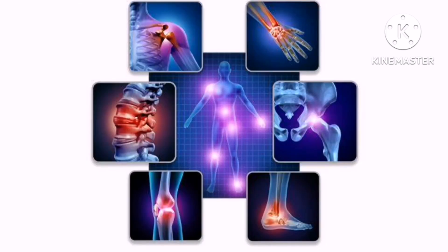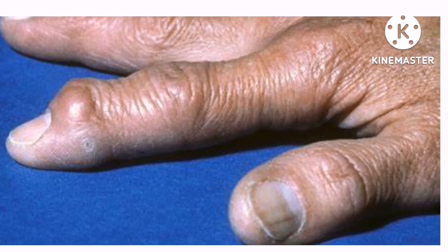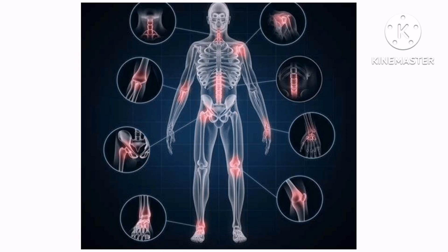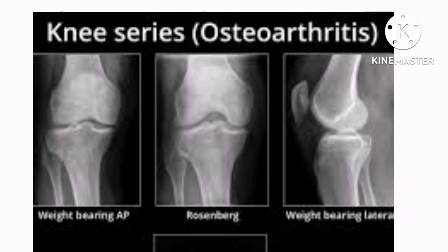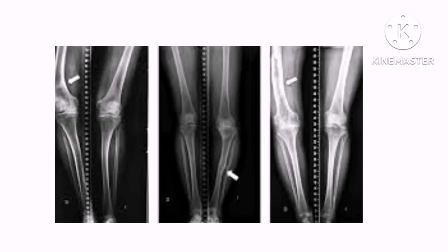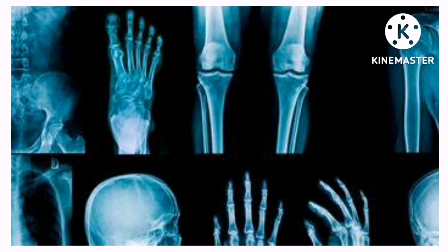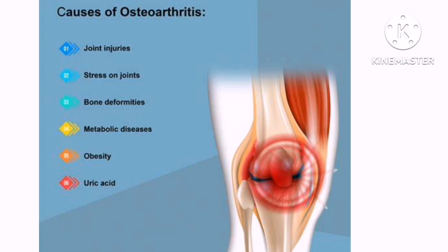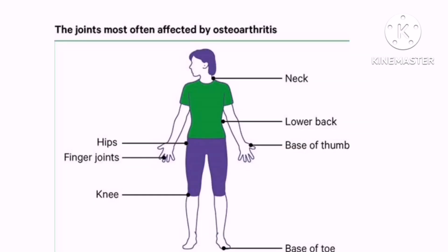Nobody seems to know exactly what causes osteoarthritis — all we hear about is wear and tear. However, there are other factors that may increase or decrease the risk. Regarding age, this condition usually starts from the late 40s onwards, and aging brings changes such as muscle weakness and reduced ability of bone to heal. Joint abnormalities are also a factor — if someone developed joint issues during childhood or was born with them, it could lead to more severe arthritis later.